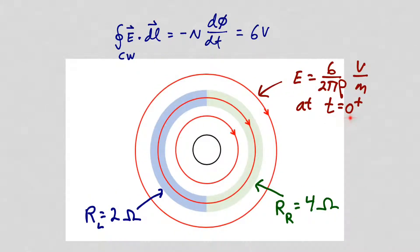At T equals zero plus, just after the current is ramped, the electric field will be circles surrounding the solenoid with a value of 6 over 2π ρ volts per meter. The electric field intensity in the left half ring and the right half ring will be the same. But because of the different conductivities, the current flowing in the left half ring will be larger than the current flowing in the right half ring.